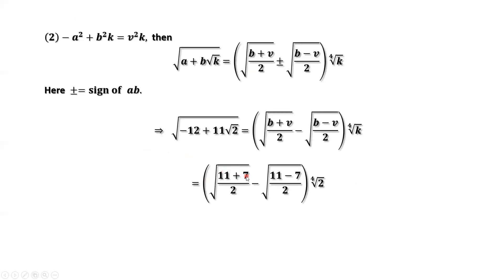11 plus 7. Here is 11 minus 7. We use the minus here. The outside, we have the fourth root of k. k in our case is 2.